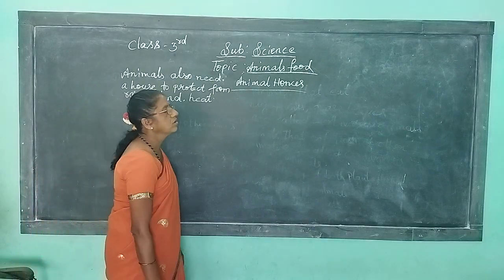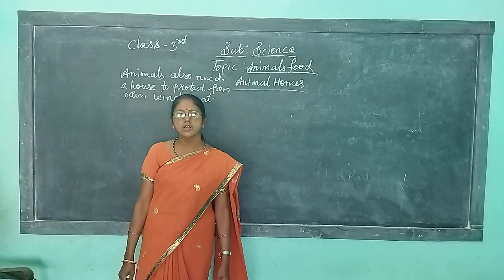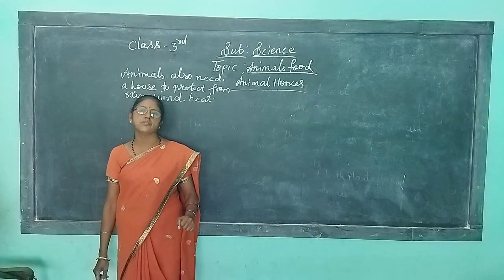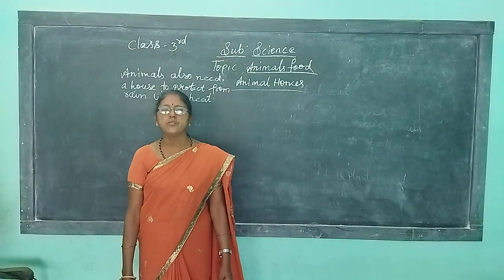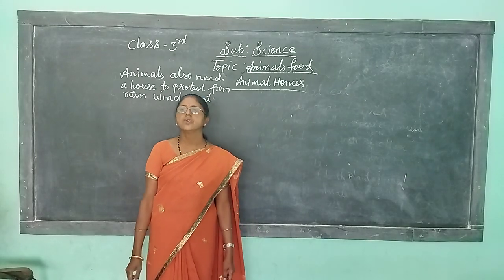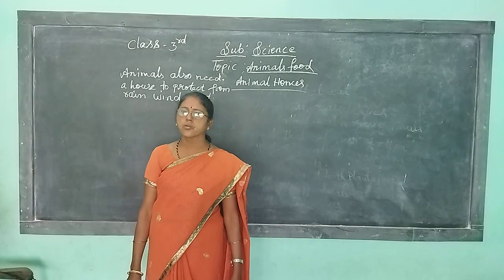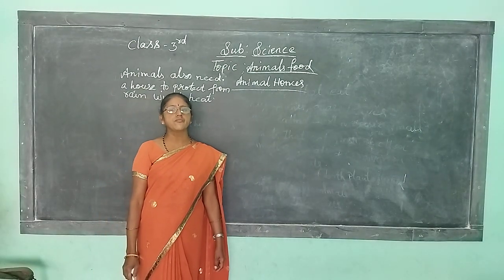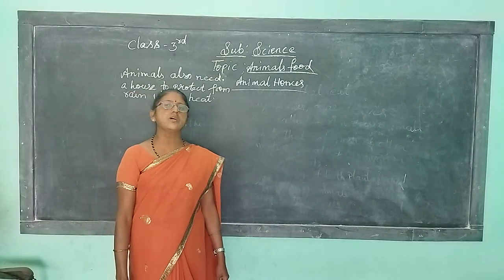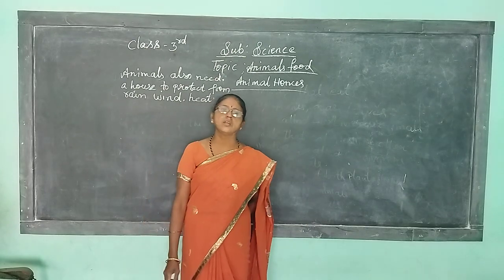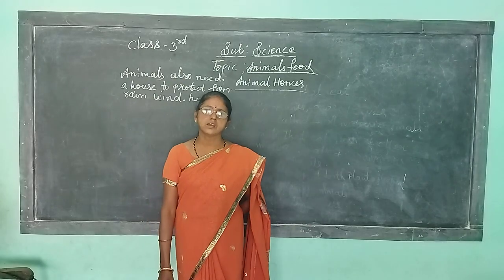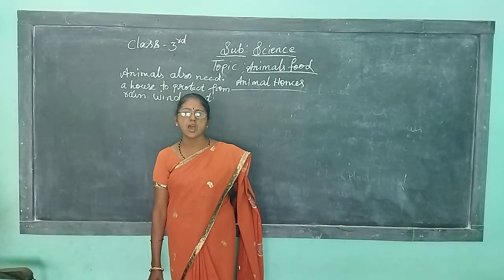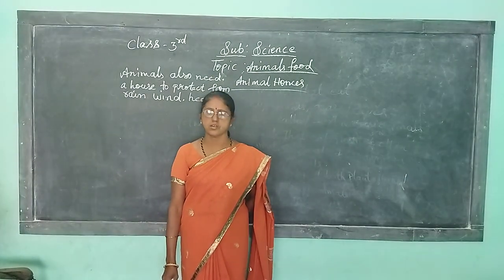Some animals live in the water — fish, octopus, crocodile, crab, tortoise. Some animals live in the forest — lion, tiger, bear, cheetah, fox, monkey, elephant. Their home is the forest. The dog lives in a kennel, K-E-N-N-E-L.